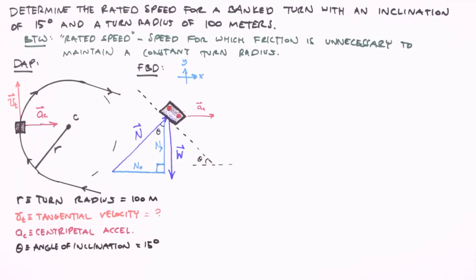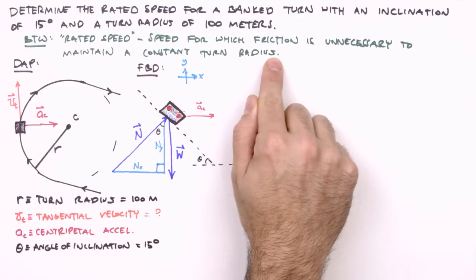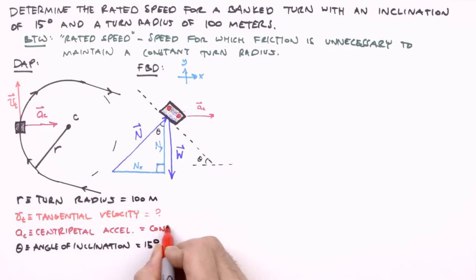Finally, the centripetal acceleration is not given, but its constancy is implied by our definition of rated speed. Maintain a constant turn radius. To maintain a constant turn radius is to undergo uniform circular motion, which implies a constant centripetal acceleration.